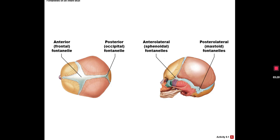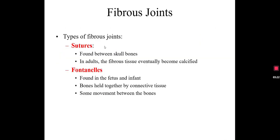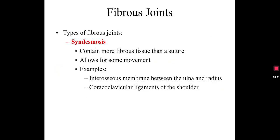So just going back — these are fibrous joints, there are four types. Sutures is the first one, fontanelles is the second, and those we have some knowledge of from previous lessons. Here's a new one. The third type of fibrous joint is known as a syndesmosis. This actually contains more fibrous tissue than a suture, and as a result we're going to have some movement there. The sutures don't really move at all, but syndesmosis is going to allow some movement. Here are some examples.